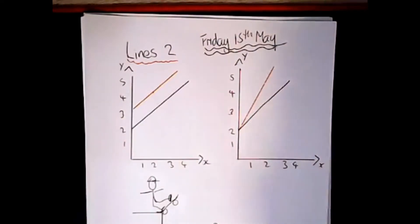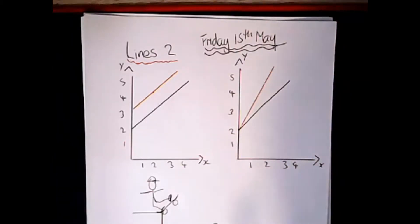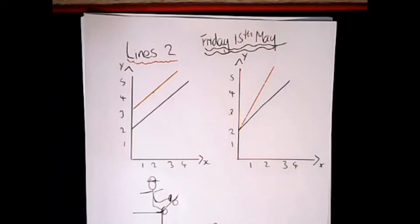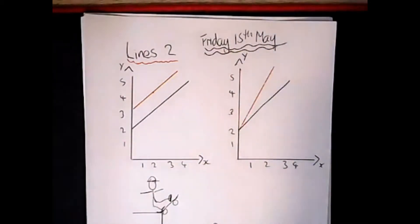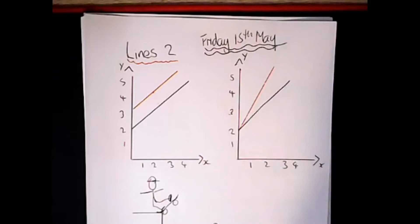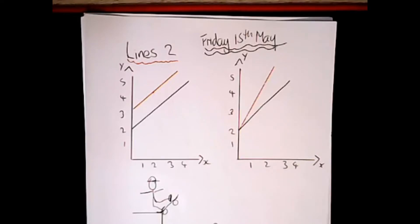Today we're going to be looking at lines two and the ins and outs of how they work. We'll have a little recap on what we were talking about last Wednesday. I've been doing a bit of research and it turns out there is a band in Canada called the Straight Lines Band, which is absolutely amazing. Let's have a little listen to the Straight Lines Band from Canada.